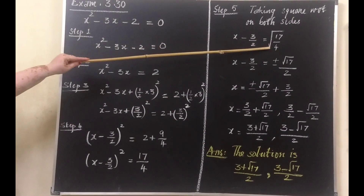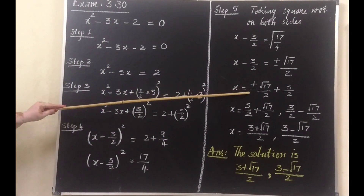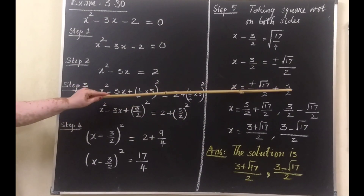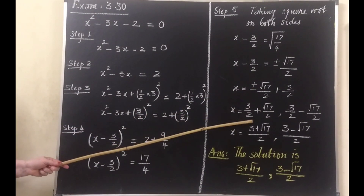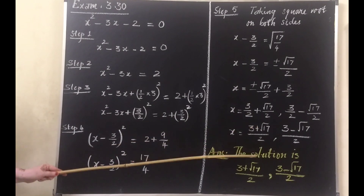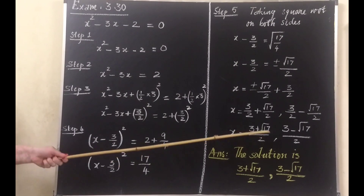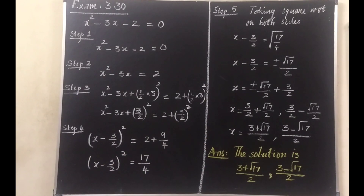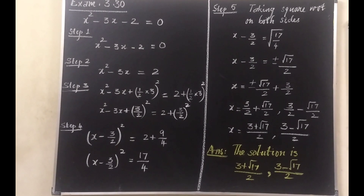With the plus or minus sign, we split into two values: x equals 3/2 plus root(17) by 2 as one value, and 3/2 minus root(17) by 2 as the second value. Since the denominators are the same, x equals (3 plus root 17) by 2 and x equals (3 minus root 17) by 2. These are irrational solutions which we cannot get by the factorization method — so for irrational solutions we use the completing square method.